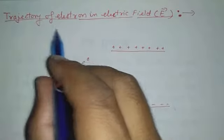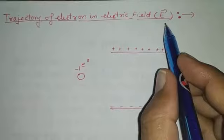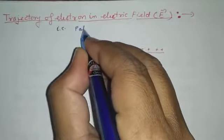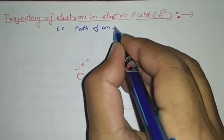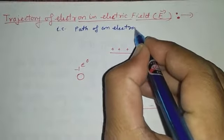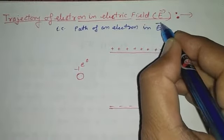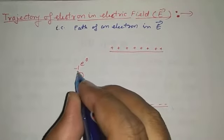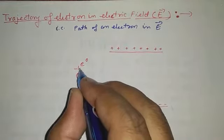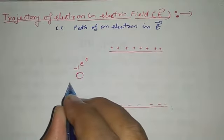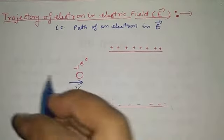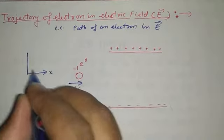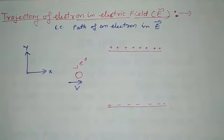We are going to see trajectory of an electron in electric field, that is, path of an electron in electric field E. Let an electron, which is represented by symbol -1e0, is traveling with velocity V along x-axis. Let it is x-axis and this is y-axis.